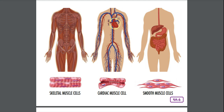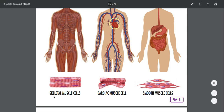Smooth muscle is the third type of muscle and it is also involuntary — you cannot consciously move it. It contracts like skeletal muscles do, only much more slowly. Smooth muscle lines the walls of internal organs and blood vessels, uses less energy than skeletal muscles, and squeezes and tightens, mixing and churning food in the stomach. It also lines your lungs and blood vessels. Your smooth muscles control your digestive tract and other internal parts of your circulatory system.